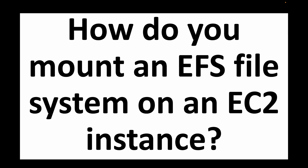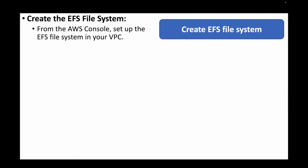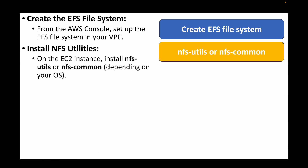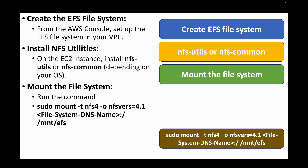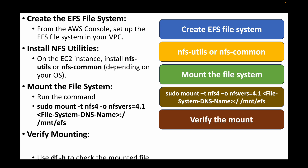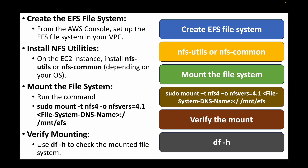The next question is: how do you mount an EFS file system on an EC2 instance? First, create your Elastic File System in the console. Then install the necessary utility — nfs-utils or nfs-commons depending on your operating system. Next, run the mount command using sudo mount to mount the EFS to your EC2 instance. Finally, verify the mount by running df -h, and you should see the Elastic File System attached and ready to use.